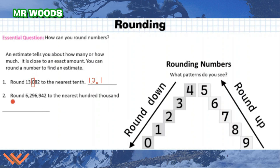Let's look at the next number here. Round 6,296,942 to the nearest hundred thousand. So where's our hundred thousand? This is our hundred thousand right here. So I'm going to mark it. I'm going to look to the right, which is a nine. Again, there's that rounding up. So I can say, okay, well that's going to be 6,300,000. So 6,300,000 that's rounding up.